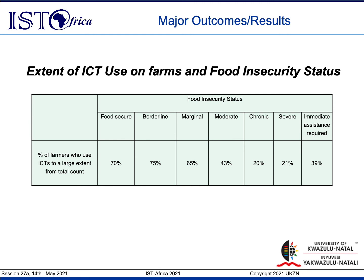In terms of the extent of ICT use on farms and food security, the correlation between these two factors showed that farmers who use ICTs to a large extent tended to be more food secure, as opposed to farmers who used ICTs to a lesser extent, as can be seen from the data provided in the results.